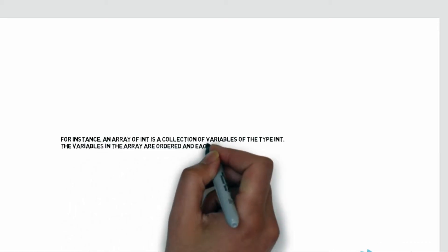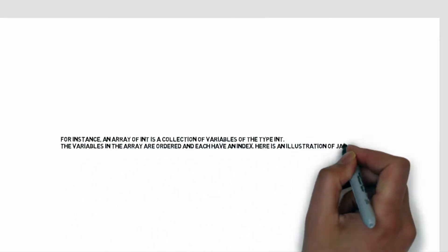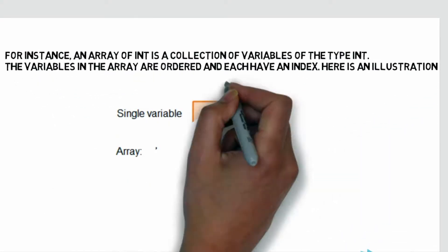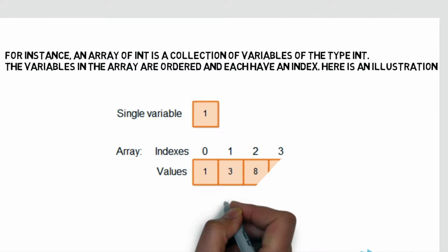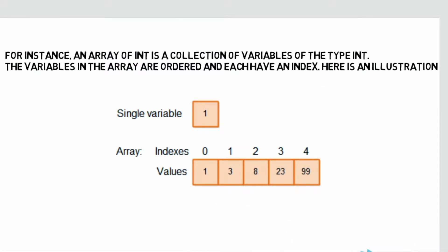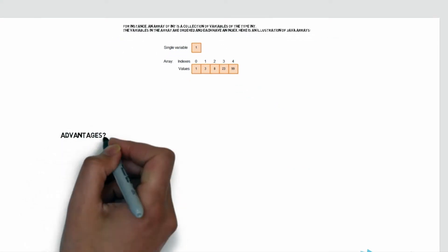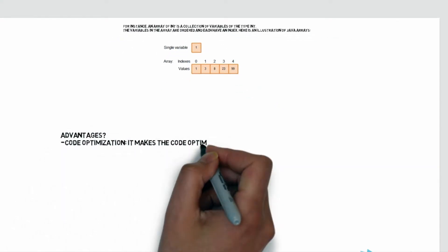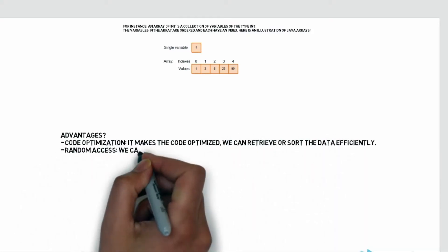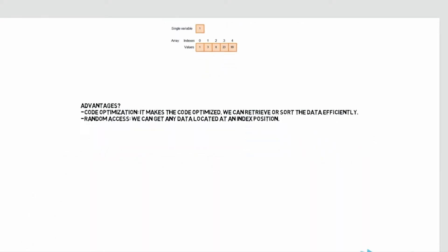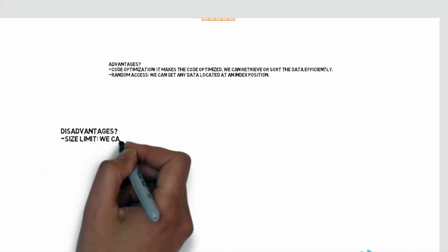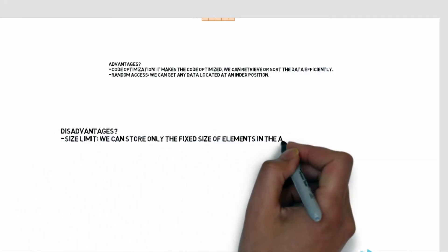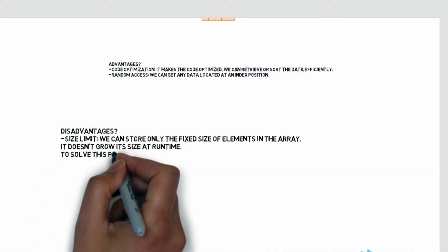The variables in the array are ordered and each have an index. For example, at index 0 there is one value and index 3 has value 23, so all values are index-based. Advantages include code optimization — we can retrieve or sort data efficiently — and random access, meaning we can access random data. A disadvantage is size limit: the array can only hold a fixed size of elements and doesn't grow dynamically.